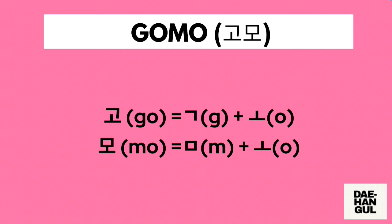How do we write gomo in Hangul? Let's start with the first syllable 'go.' First, we need to draw a giyeok character followed by the 'o' character. Then for the second syllable 'mo,' we need to draw first a mieum character followed by the 'o' character. We then combine the Hangul for each of these two syllables to form the Hangul of the word gomo.